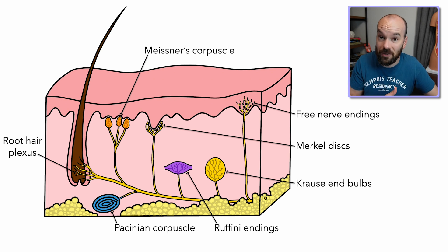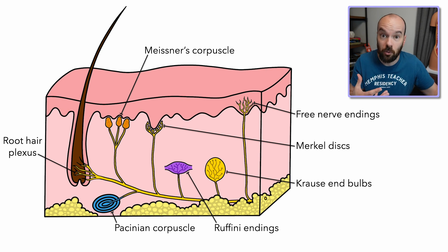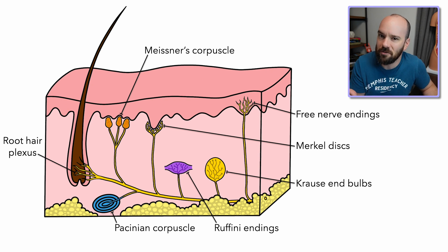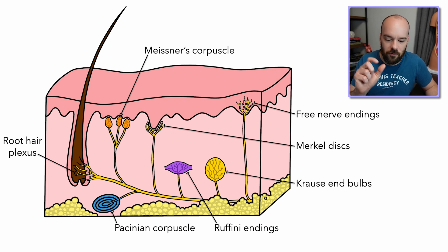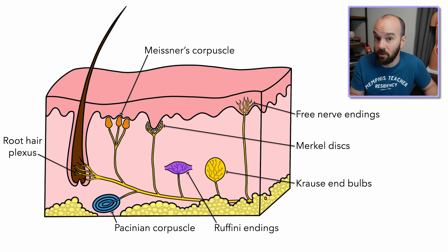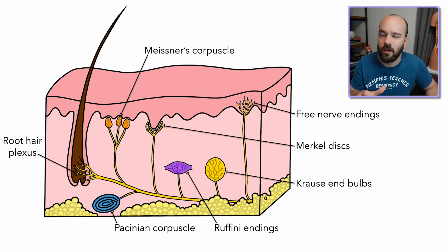Thermoreceptor free nerve endings are actually very adaptive. Think about jumping into a cold pool — when you first get in you think it's freezing, but after a minute your body starts to get used to it. The temperature of the pool hasn't changed, but your thermoreceptor free nerve endings adapted. When you first enter something cold or warm, they send signals quickly to alert your brain, but as long as it's not at a dangerous level like burning or freezing skin, they'll stop sending signals after a while and become less responsive to that temperature.